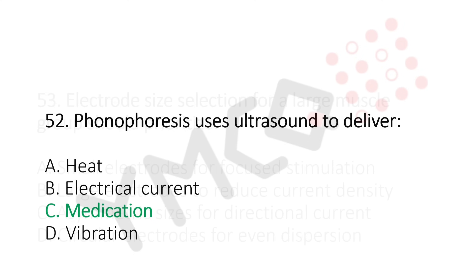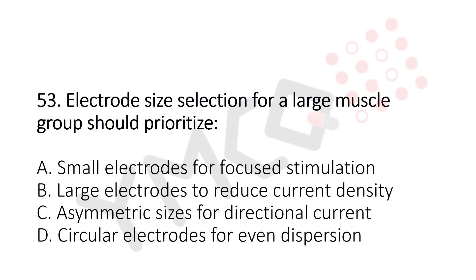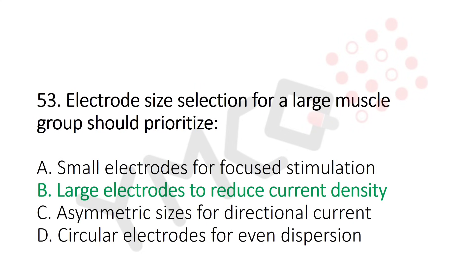Now let's move to question number 53. Electrode size selection for a large muscle group should prioritize: Option A, small electrode for focused stimulation. Option B, large electrode to reduce current density. Option C, asymmetric sizes for directional current. Option D, circular electrode for even dispersion. And the answer is Option B, large electrode to reduce current density.